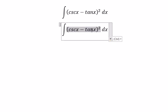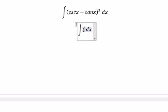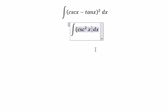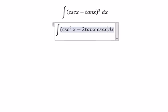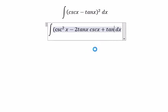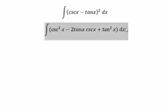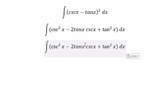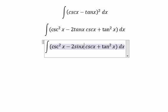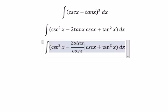We need to expand this one and you get cosecant squared s minus 2 tan s cosecant s plus tan squared s. Next, tan s we change to sine s over cosine s, cosecant s we change to 1 over sine s.